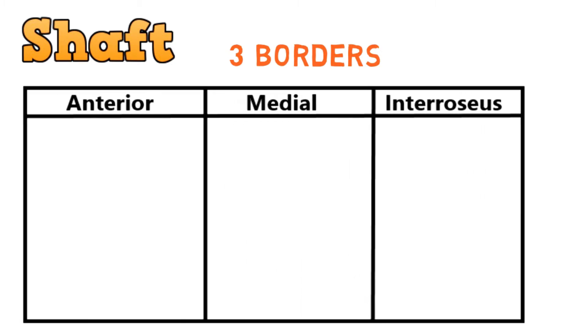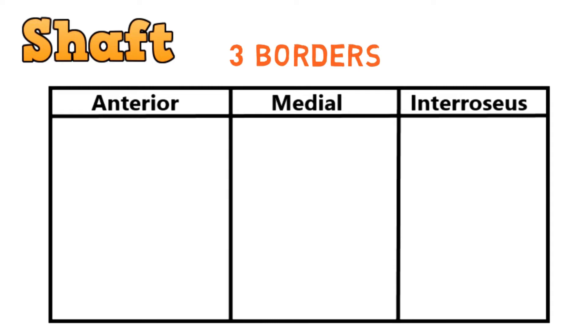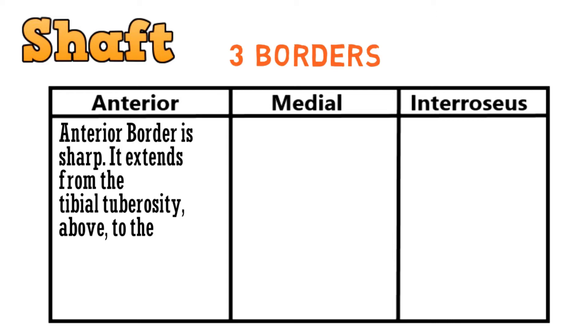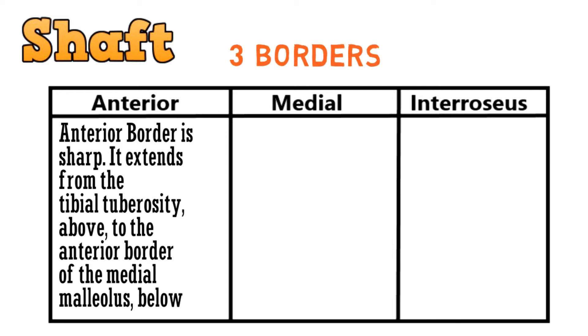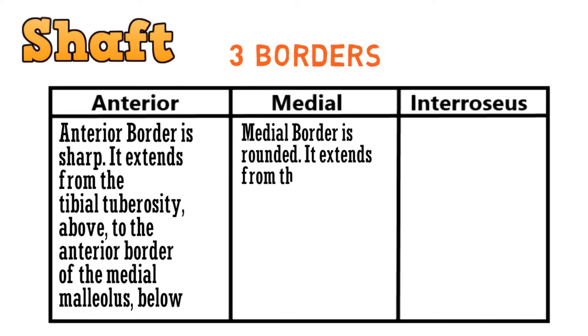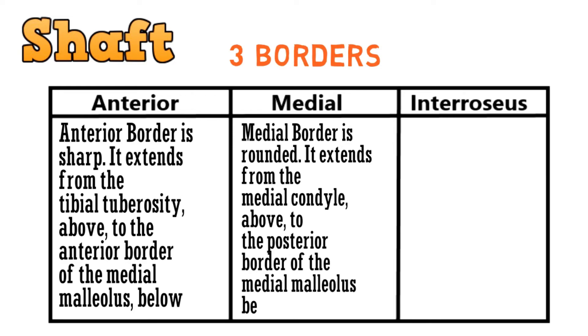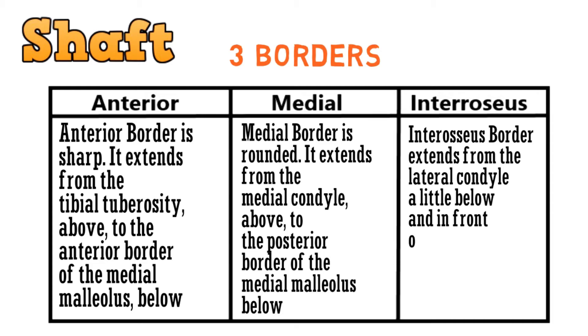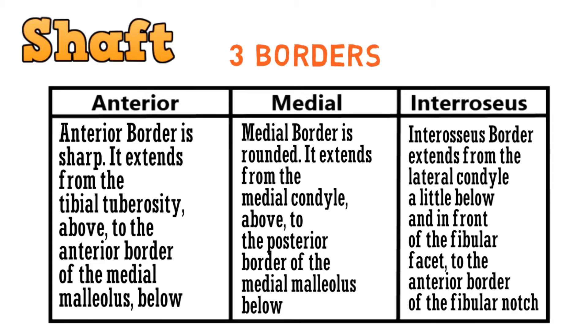With this, we complete the proximal end and move to the next part — the shaft. The shaft has three borders: the anterior border, medial border, and interosseous border. The anterior border is sharp; it extends from the tibial tuberosity above to the anterior border of the medial malleolus below. The medial border is rounded; it extends from the medial condyle above to the posterior border of the medial malleolus below. The interosseous border extends from the lateral condyle, a little below and in front of the fibular facet, to the anterior border of the fibular notch.